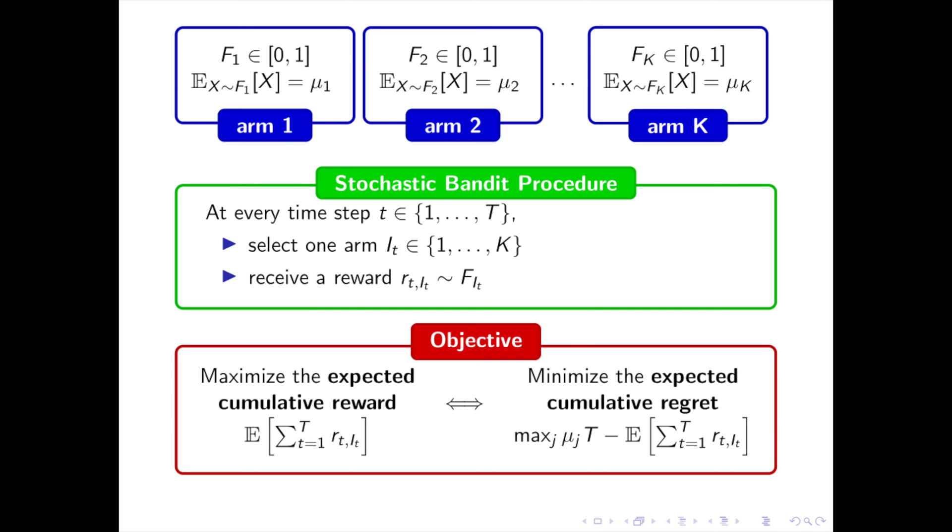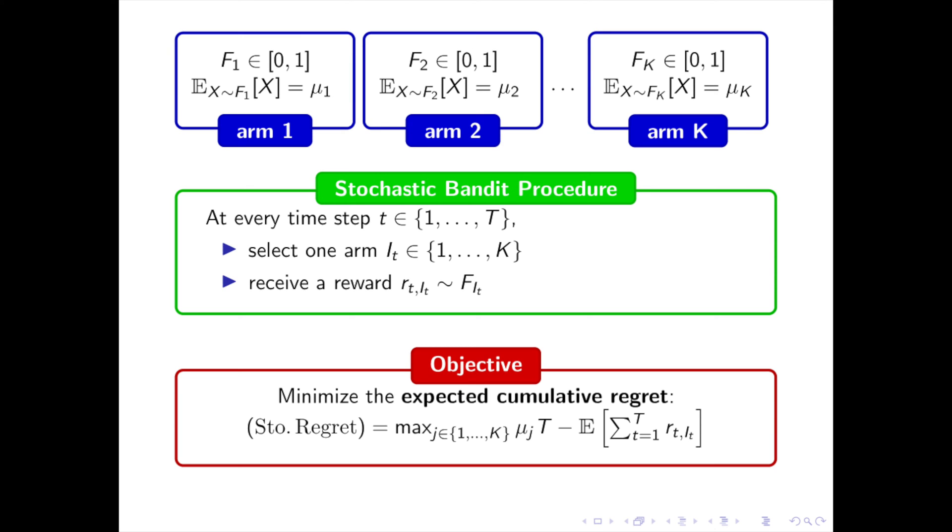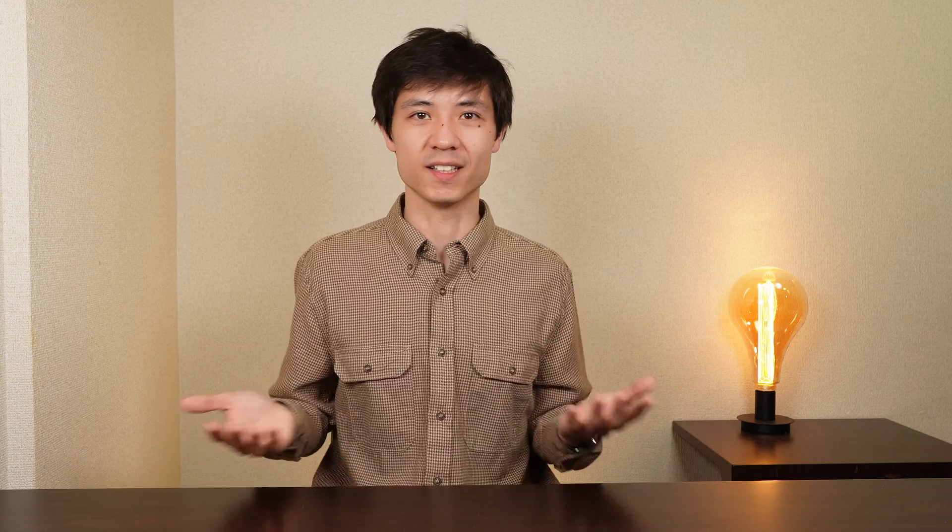The objective is to find an arm selection strategy i1, i2, …, i_T which maximizes the expectation of the sum of rewards — the expected cumulative reward. Equivalently, the strategy should minimize the expected cumulative regret, defined as max_j(µ_j · T) minus the expected cumulative reward. Essentially, we want to select as often as possible the arm with the largest expectation µ_j. However, the arm distributions and their expectations are unknown, so our strategy must balance exploration — collecting information by selecting each arm frequently — and exploitation — selecting more frequently the arm yielding the highest rewards. This is called the exploration-exploitation dilemma.